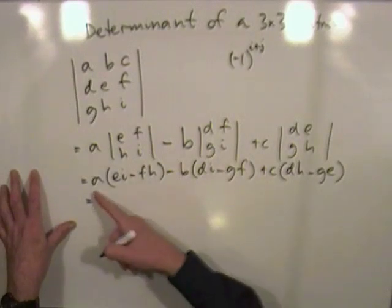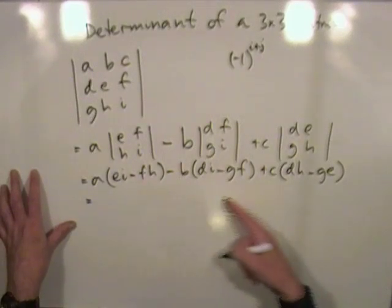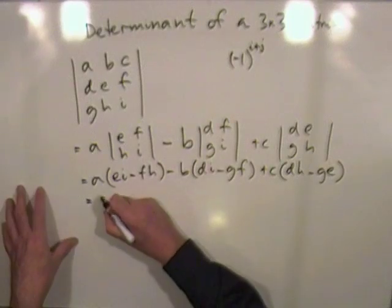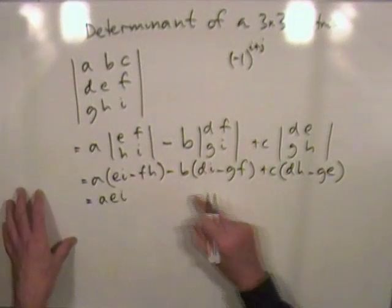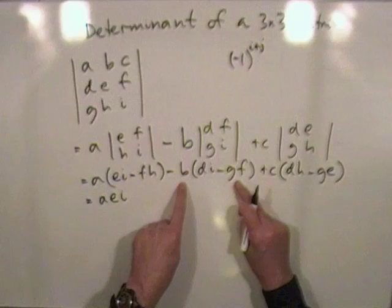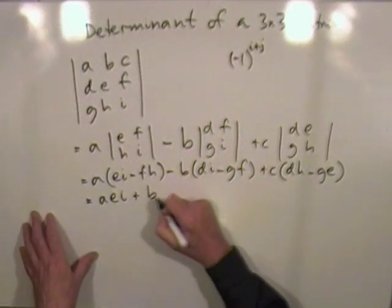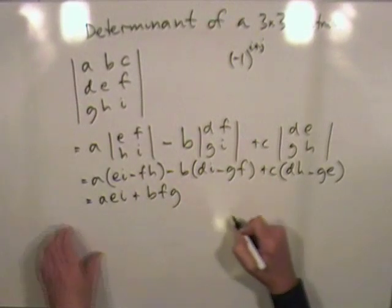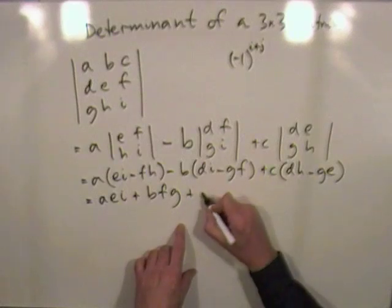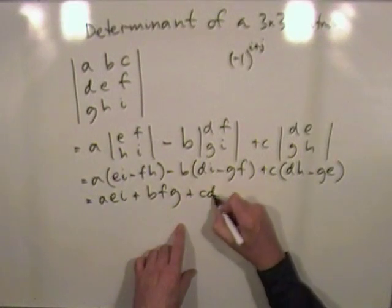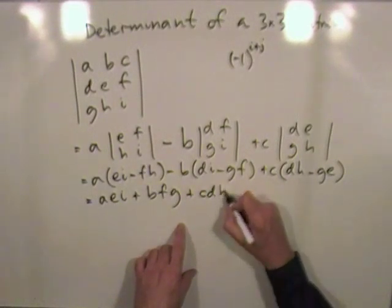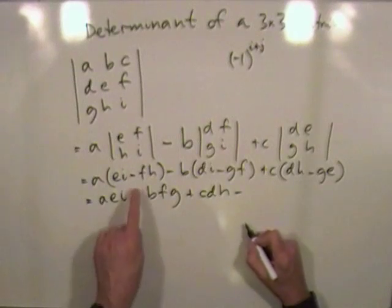Or maybe I should have had them in alphabetical order, I'll put them into that now. So multiplying it out, I'm going to multiply it out taking all the positive ones first, so I've got A, E, I, the positive ones here would be this, plus B, F, G, plus C, D, H, minus all the negative ones.